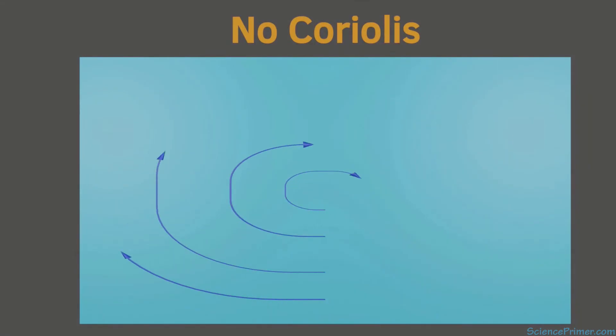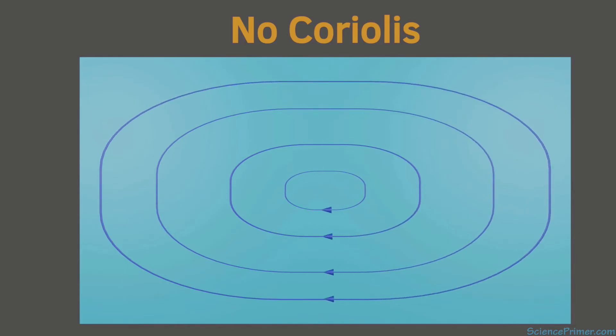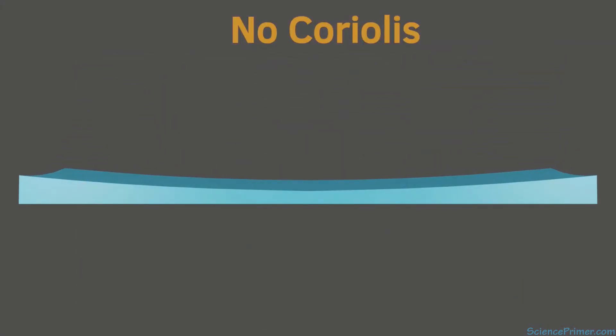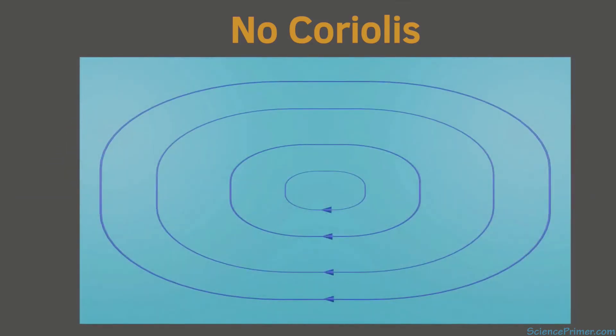With no Coriolis effect, water particles moved in relatively symmetrical paths around the basin. This movement caused water to push away from the center of the basin towards the edges, causing a lowering of water level in the middle, similar to what happens when you mix a cup of tea or coffee with a spoon.